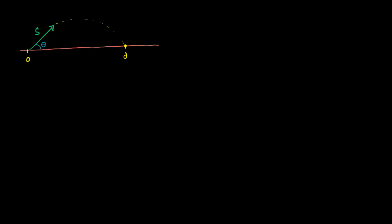Whenever you do any problem like this, where you're shooting something off at an angle, the best first step is to break down that vector. A vector is something that has magnitude and direction — the magnitude is s, maybe feet per second or miles per hour, and the direction is theta. So if you have s and theta, you're giving me a vector. What you want to do is break this vector down into its vertical and horizontal components first, and then deal with them separately — one to figure out how long you're in the air, and the other to figure out how far you actually travel.